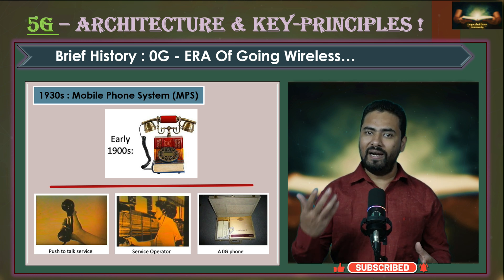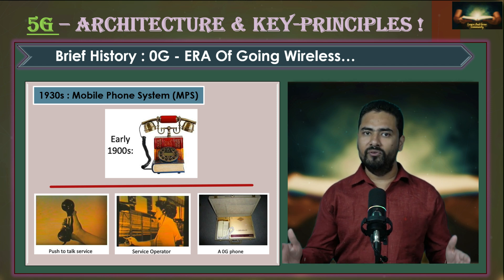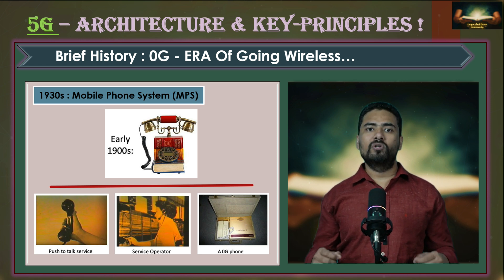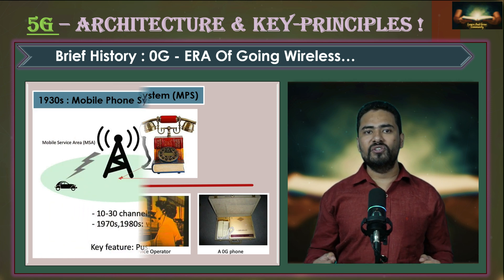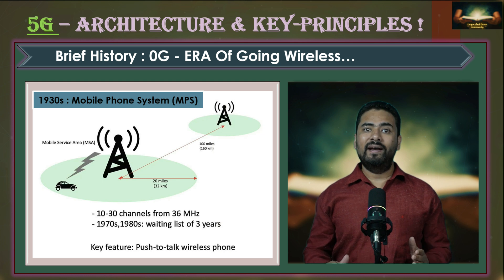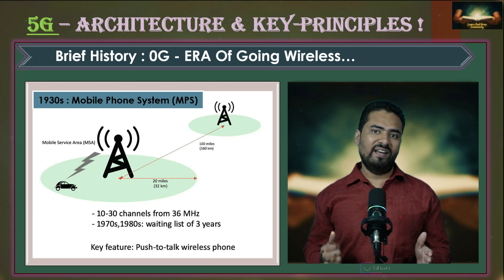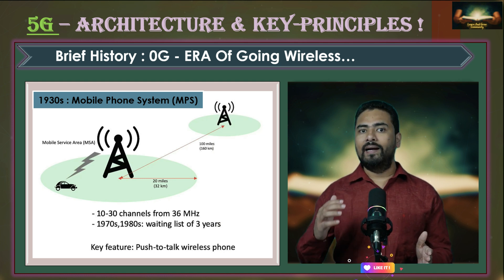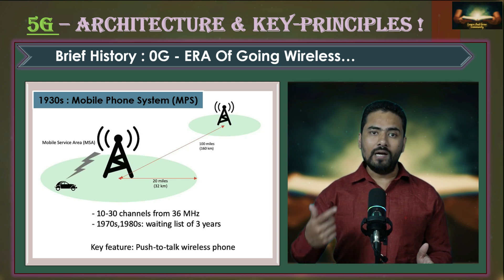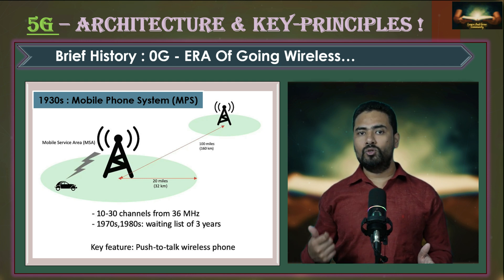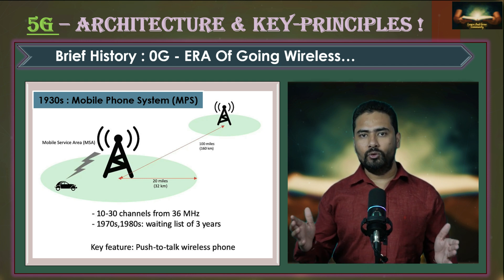In the era of 1900, landline phones were common around the world — that was the first step in telecommunications. By the 1930s, the first mobile phone was invented with wireless support, and that was the start of the wireless domain, generally called as 0G.